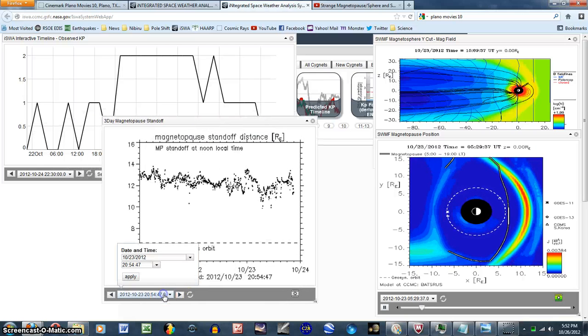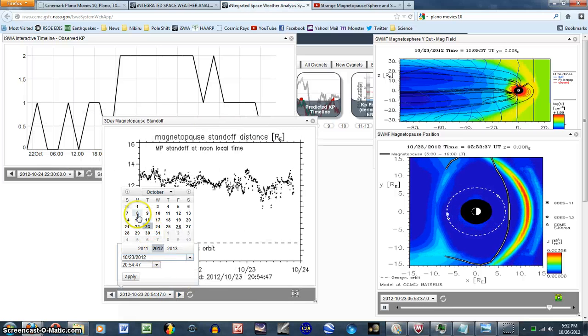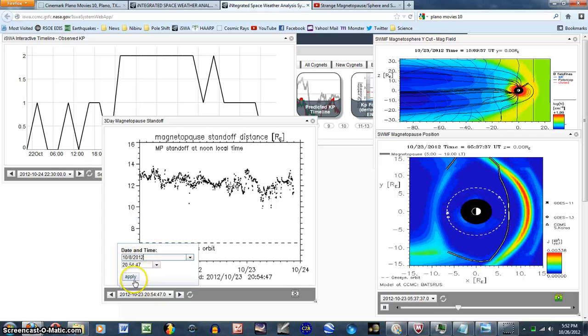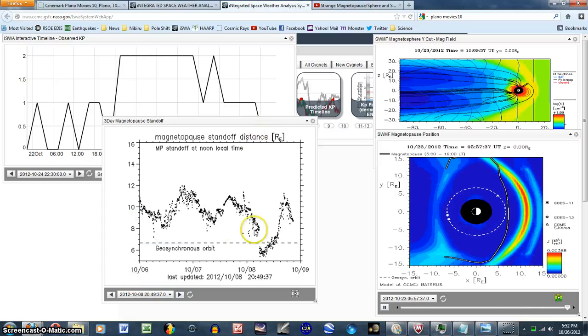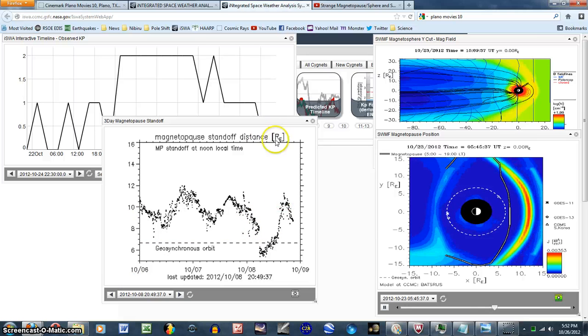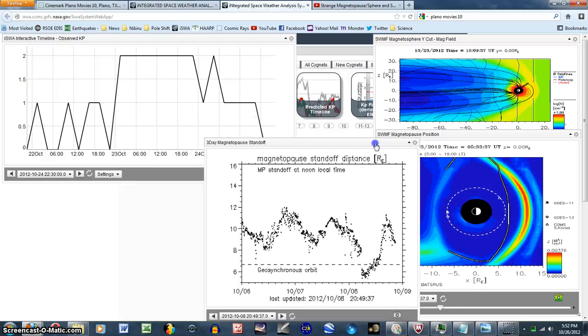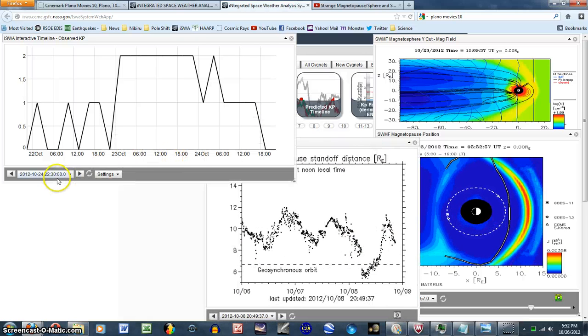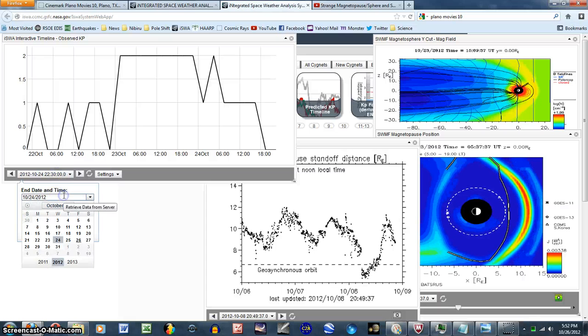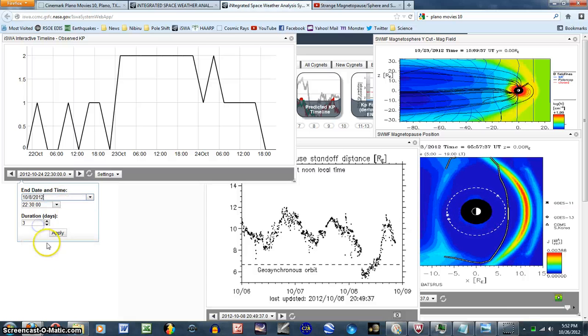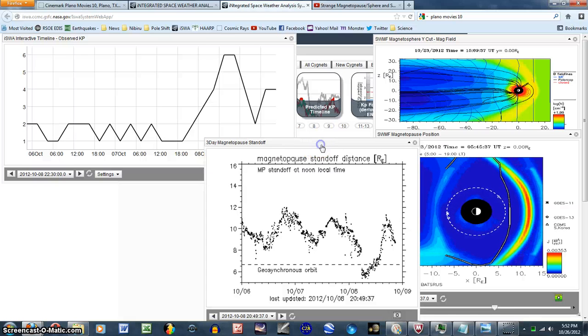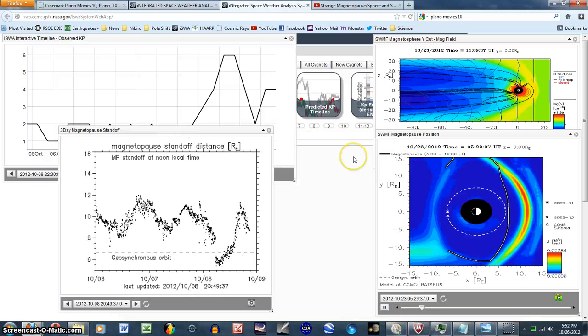This just going all crazy. When there was a Kp of 6, I think on that day it was the 8th, Kp of 6 it was actually within geosynchronous orbit. There's been a lot of strange things going on, and I don't know if NASA is scrubbing their data.